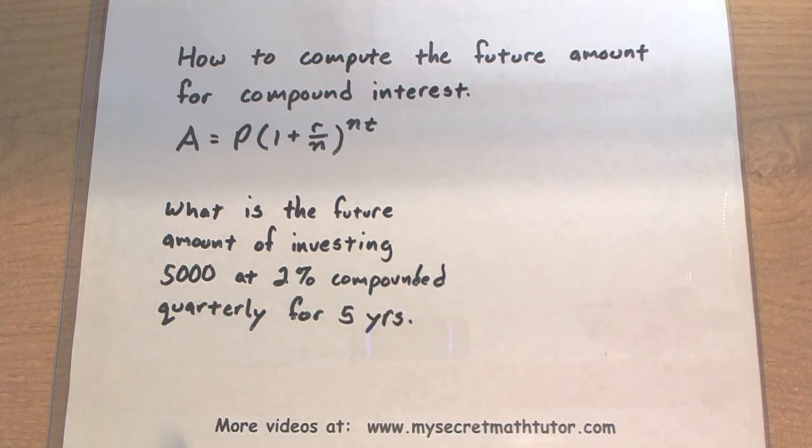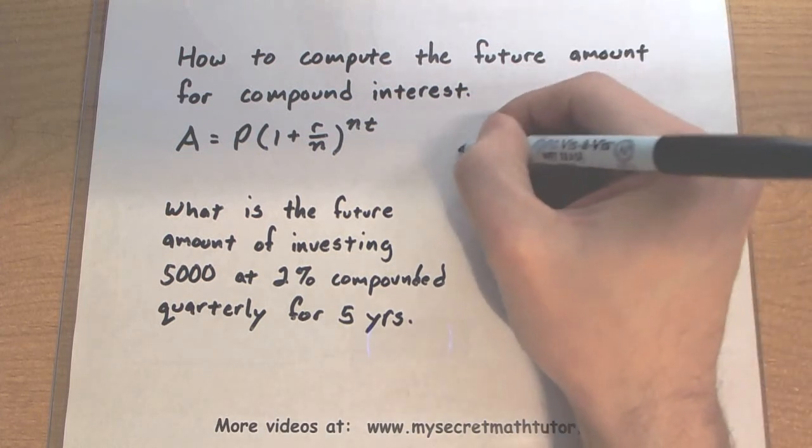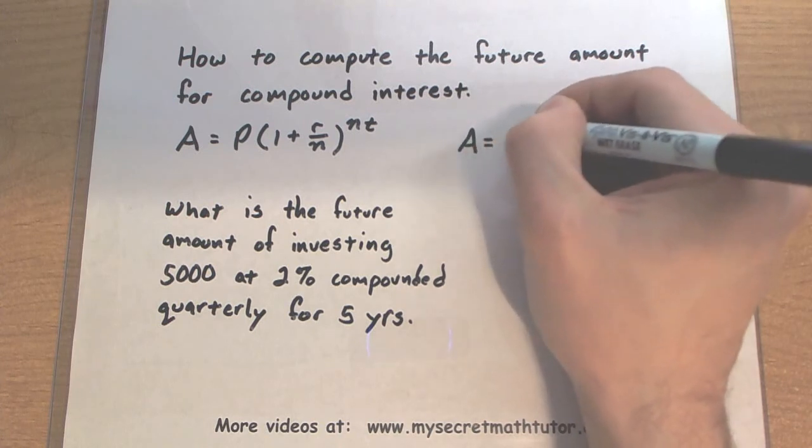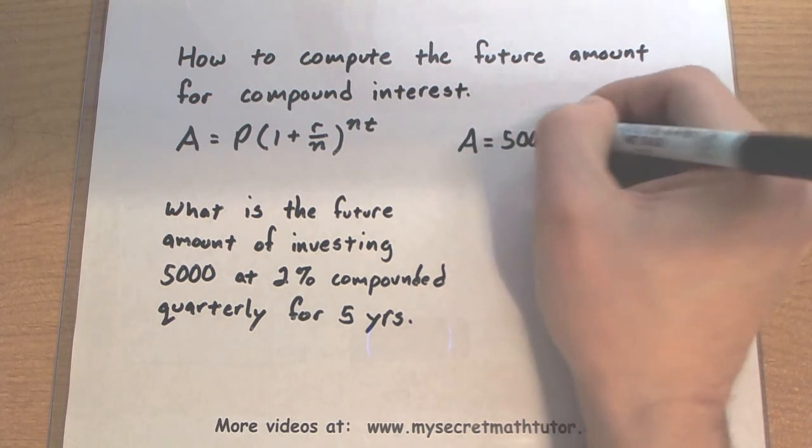What is the future amount of investing $5,000 at 2% interest compounded quarterly for five years? $5,000 is my principal.